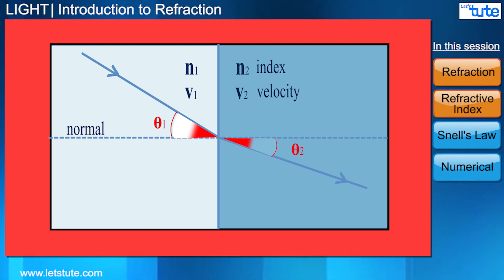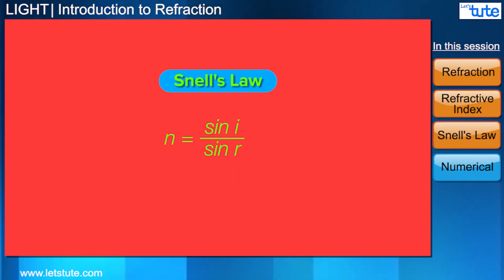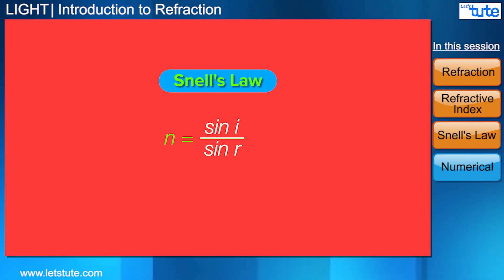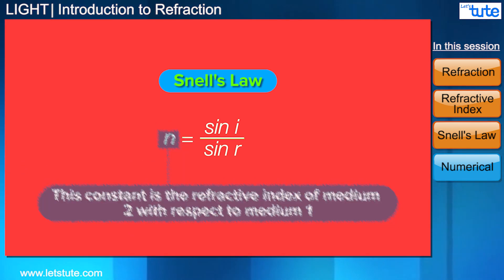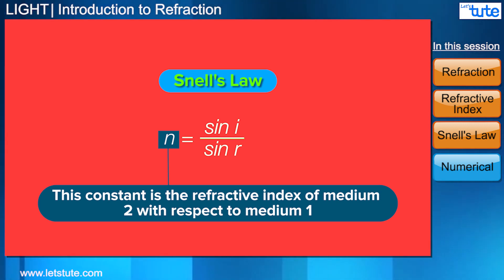This brings us to the second law of refraction, also known as Snell's law. For any two media and a wavelength of light, the ratio of the sine of the angle of incidence to the sine of the angle of refraction is a constant. This constant is the refractive index of medium 2 with respect to medium 1.